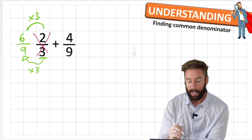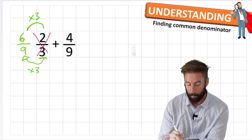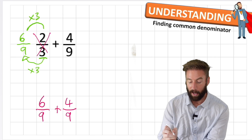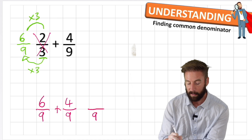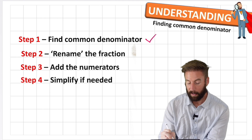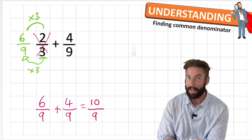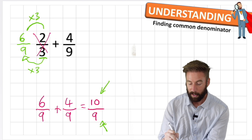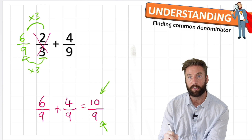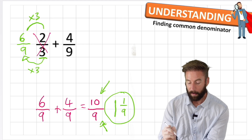Now I can simply add 6 ninths to 4 ninths. I'm working in ninths so my answer will still be in ninths - I just add my numerators: 6 plus 4 is 10 - giving me 10 ninths. Let me check my steps: I found the common denominator, renamed the fraction, added the numerators. Now simplify if needed - this is an improper fraction because we have a bigger numerator than denominator. I can turn it into a mixed number by dividing 10 by 9, giving 1 and 1 ninth.